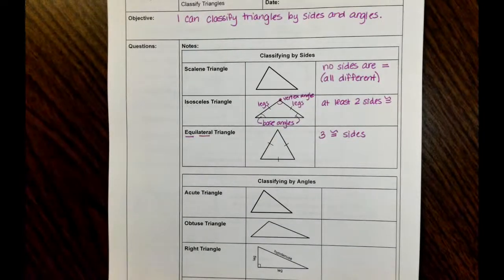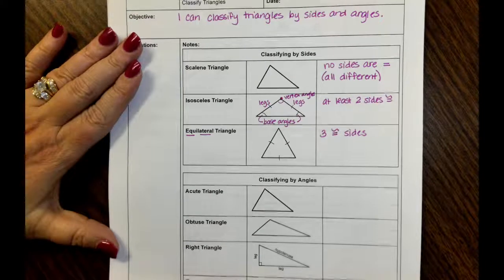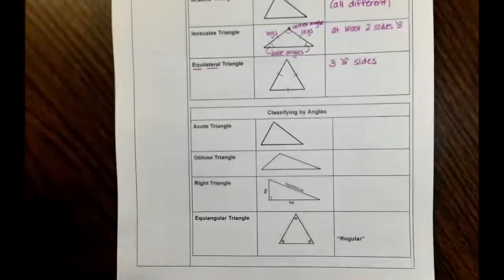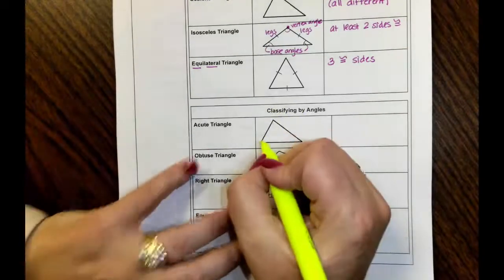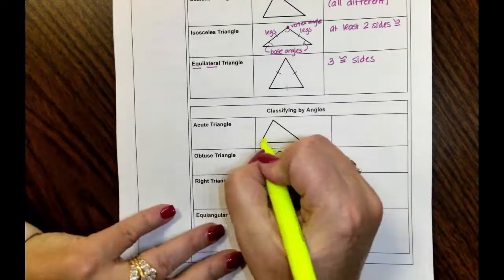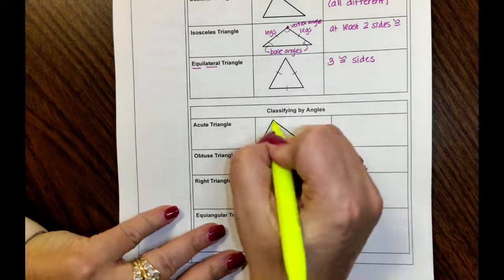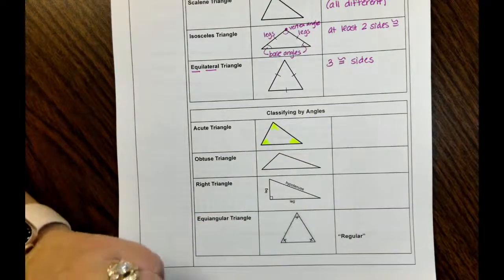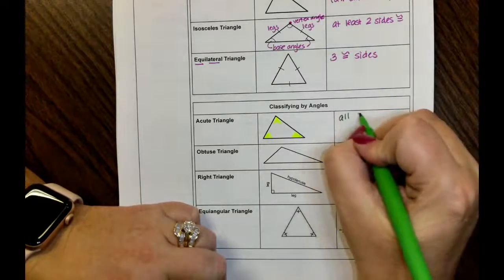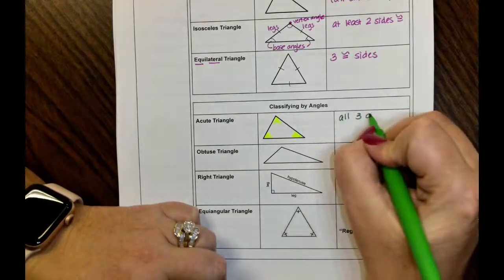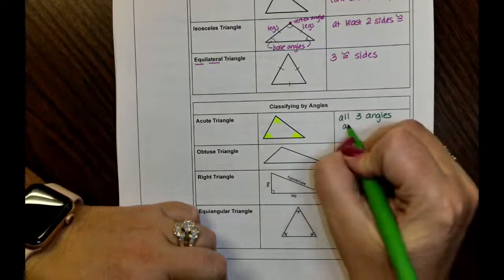You can also classify triangles by their angles. If you look at the angles of a triangle and all three angles are acute — meaning less than 90 degrees — then the triangle is called an acute triangle.